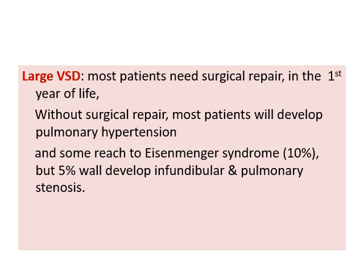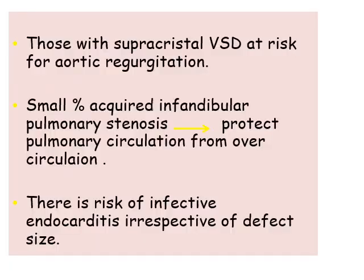About 10% of patients may reach Eisenmenger syndrome. About 5% will develop infundibular pulmonary stenosis — the pulmonary valve narrows naturally to protect the lung from over-circulation. Those with supracristal VSD are at risk of developing aortic regurgitation. A small percentage acquire infundibular pulmonary stenosis — about 5% — which protects the pulmonary circulation from over-circulation. There is also a risk of infective endocarditis irrespective of defect size.